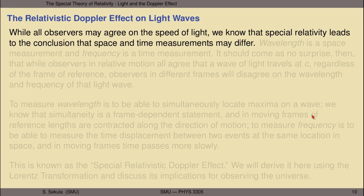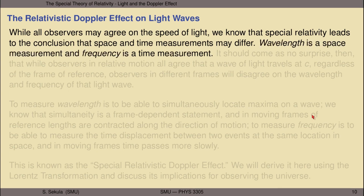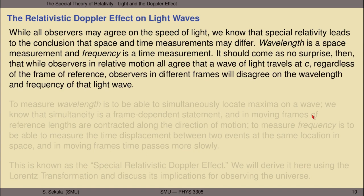Now let's think about the Doppler effect on light waves. There is a classical Doppler effect on light waves, but because time and space measurements are also relative to the frame in which you're making the measurement, there is a relativistic component that gets added to this kind of frequency shift, even for light waves. While all observers may agree on the speed of light, special relativity leads to the conclusion that space and time measurements may differ between observers in different reference frames. Wavelength is a space measurement, and frequency is a time measurement.